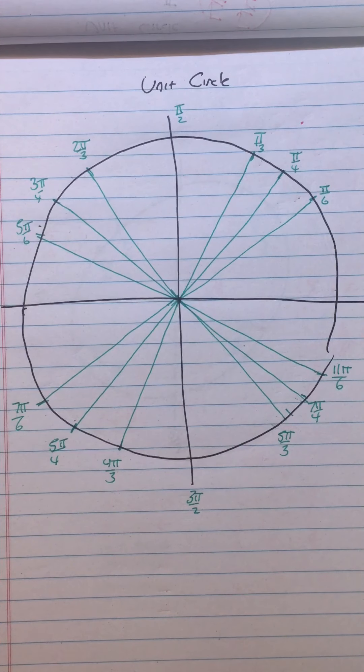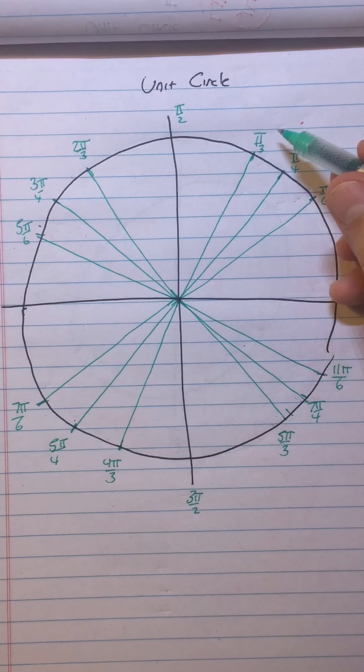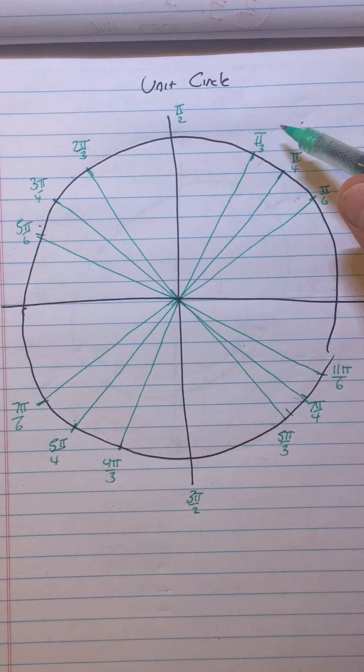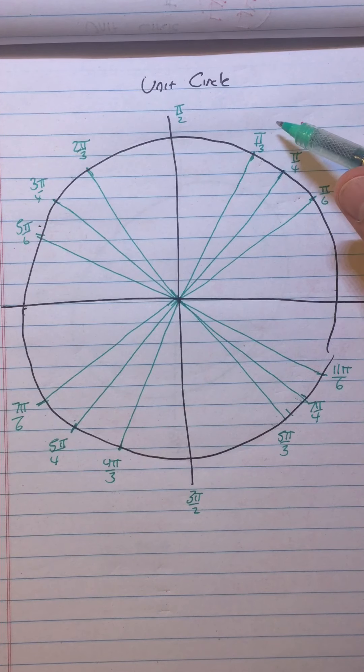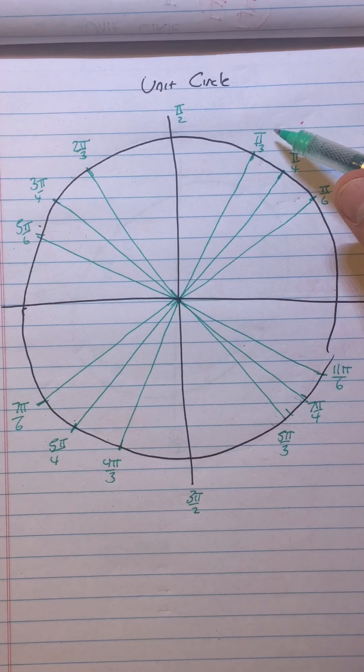Everybody knows that tangent is sine over cosine, so if you wanted tangent of π/3, you could find that sine of π/3 is √3/2, cosine is 1/2, so √3/2 over 1/2, divide it, cancel the 2's, and you get √3.